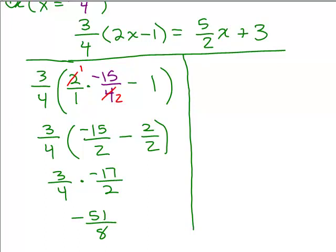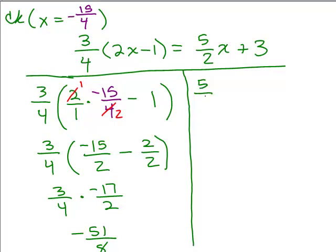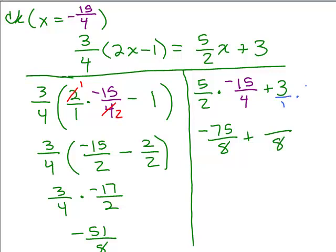All right, we're going to put in negative 15 fourths on the other side for x. Negative 15 fourths plus 3. So nothing cancels here when I do the multiplication. I get negative 75 eighths plus 3. All right, so we need to get a common denominator. We need to make this eighths. So we could do that by multiplying 3 over 1 times 8 over 8, which is going to be 24. All right, now I've got a common denominator of 8, so it's going to be eighths. And negative 75 plus 24 is going to be negative, and then we subtract 75 minus 24 to get negative 51.